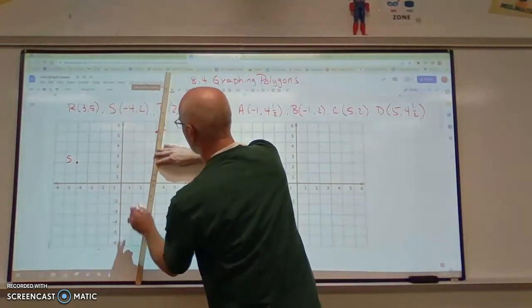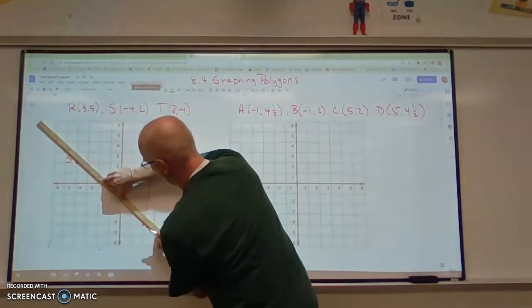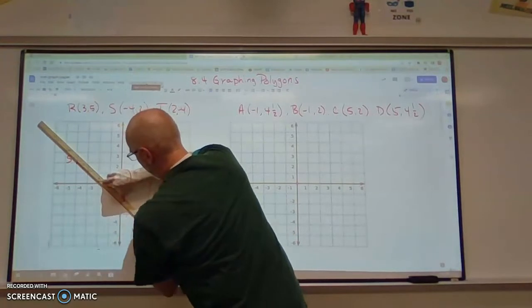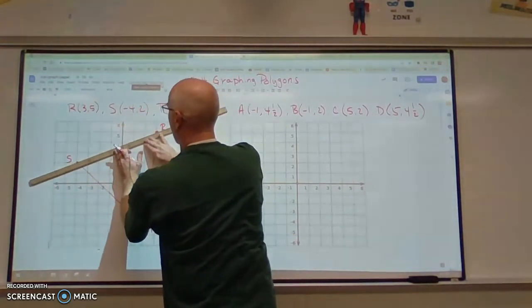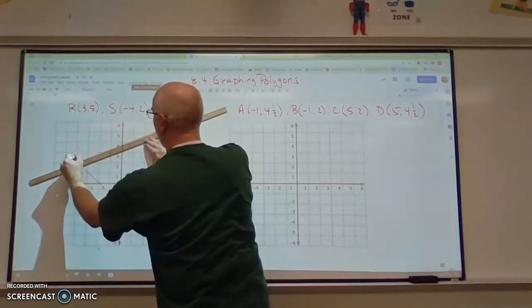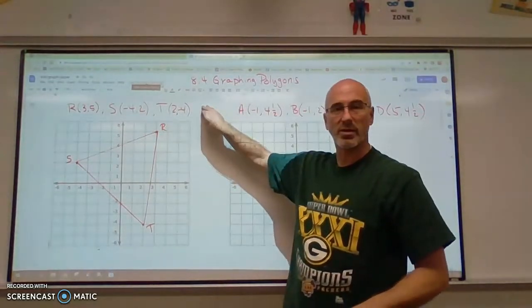And we take a straight edge and we connect our points. And we now have a triangle using these three points.